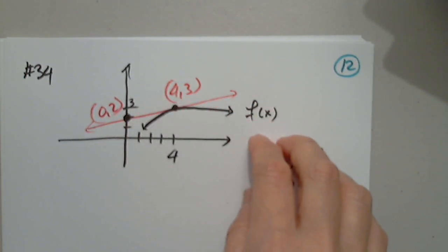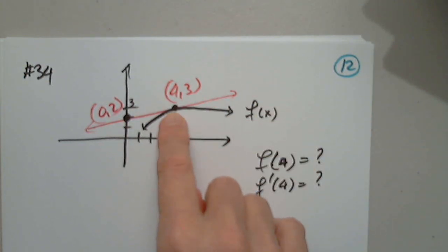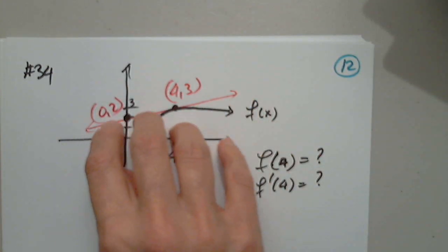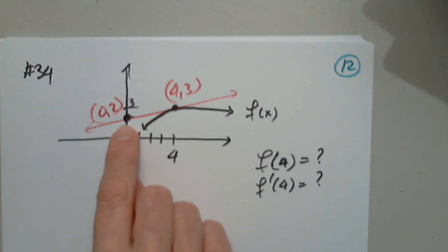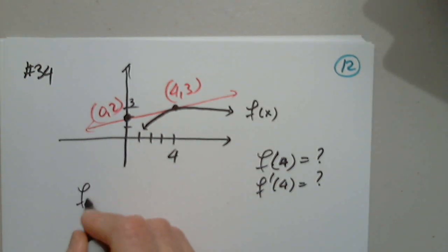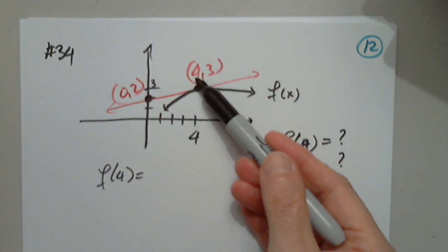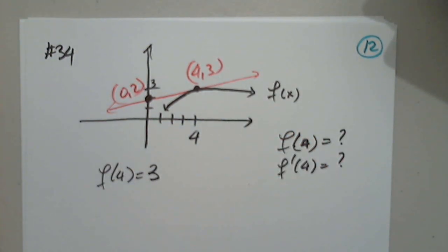Again, we have a function. It has a point. It has a tangent at that point. And we also know that if we extend the tangent, it will cross the y-axis at 0 comma 2. They're asking us to find f of 4 and f prime of 4. So let's start with f of 4 first. Can anyone give us f of 4? 3. Yes, there is no problem here, right? f of 4 must be 3. There is no discussion there.